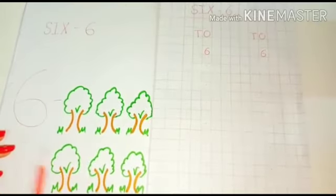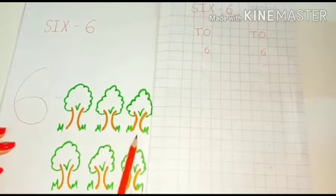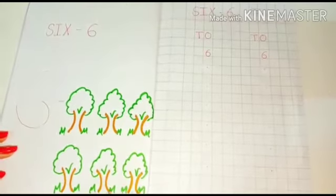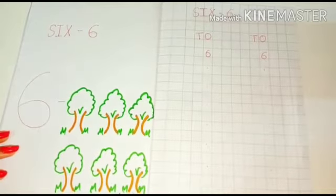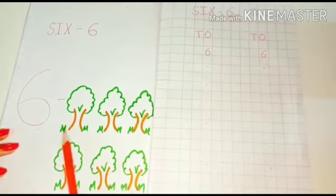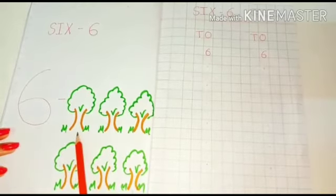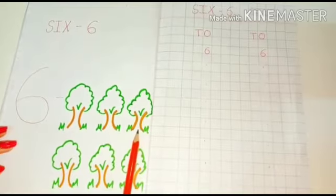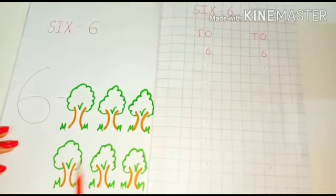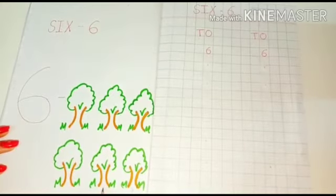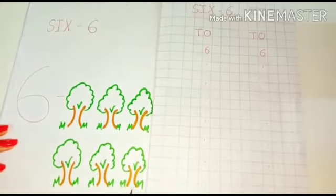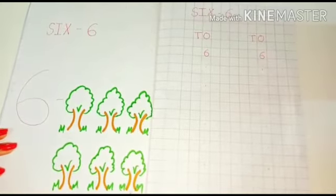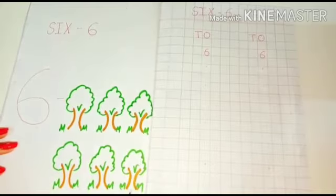First we will count these trees. How many trees are there? Let's count: 1, 2, 3, 4, 5, 6. There are 6 trees.